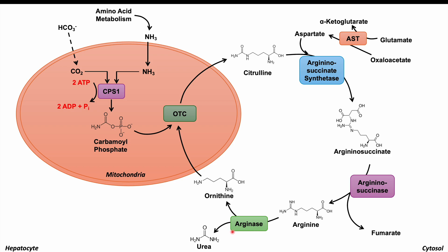An important point is that the arginase enzyme is only present in certain parts of the body — notably hepatocytes and to a smaller degree the kidneys. Because the OTC enzyme has impaired functioning in OTC deficiency, there are issues with this cycle that lead to particular effects inside the cell.